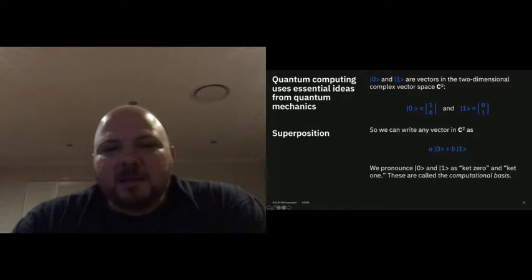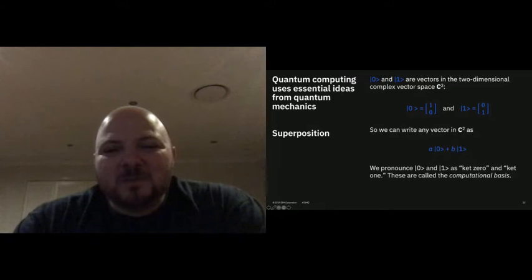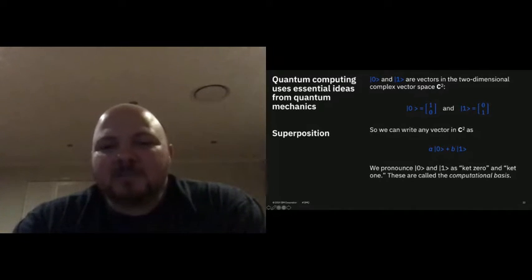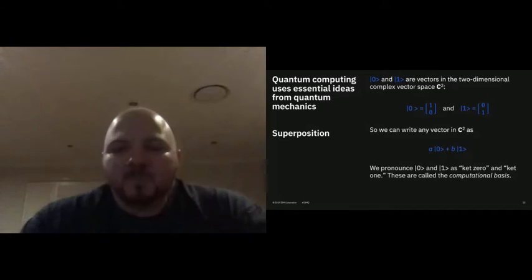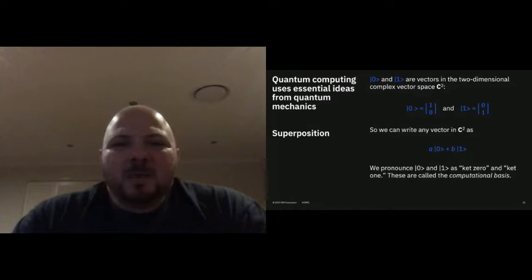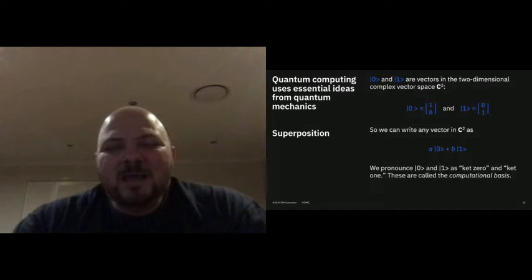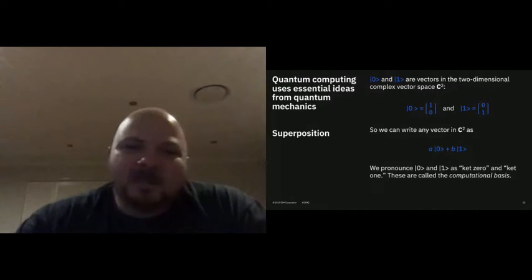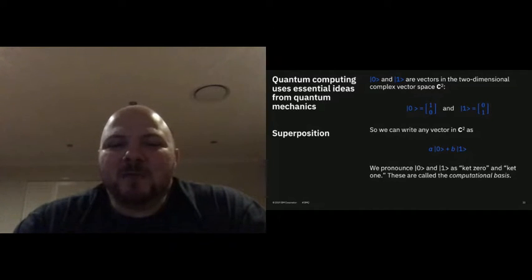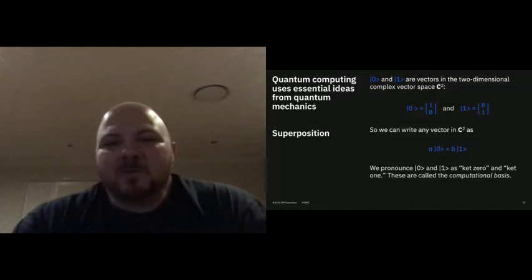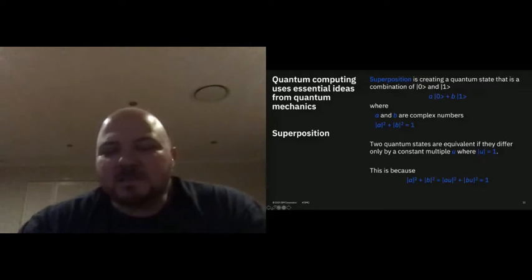We can write this vector in a notation that says we have some coefficient or amplitude for zero plus some amplitude for one, which gives you the direction of that vector. That means I can actually represent a qubit as being a combination of both zero and one at the same time. The probability amplitude — if you want the actual probability, take the square of the absolute value. If you add those together and they equal one, you've got a probability. For example, this might be 20% chance of being zero and 80% chance of being one.